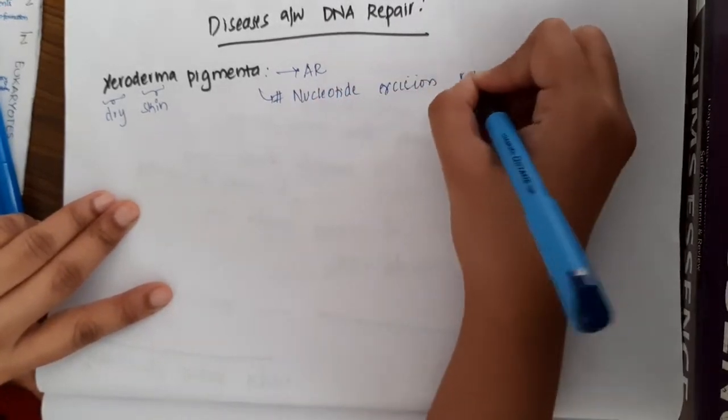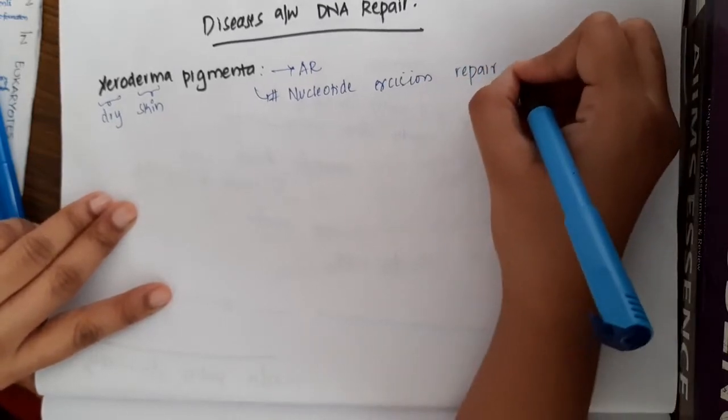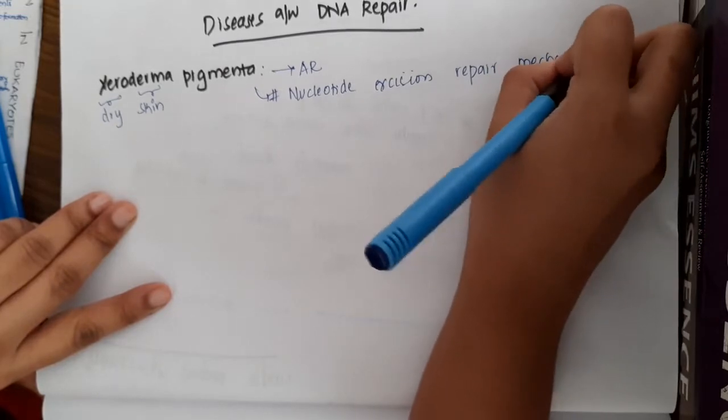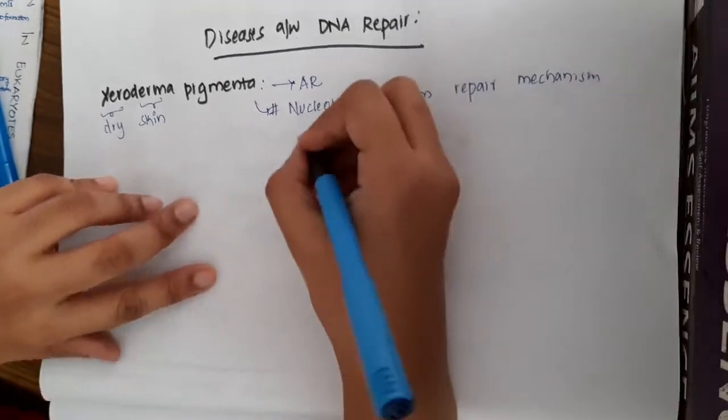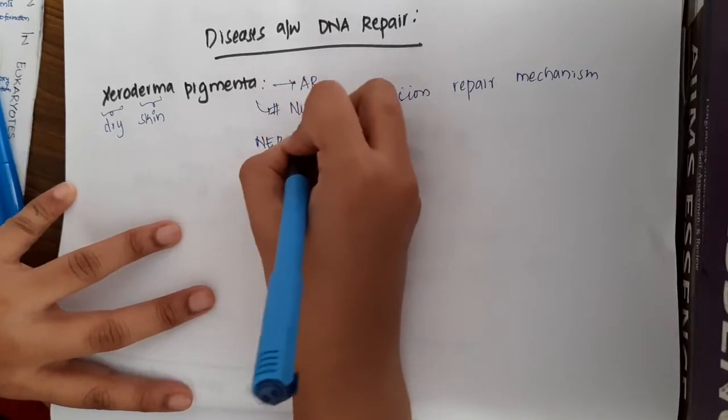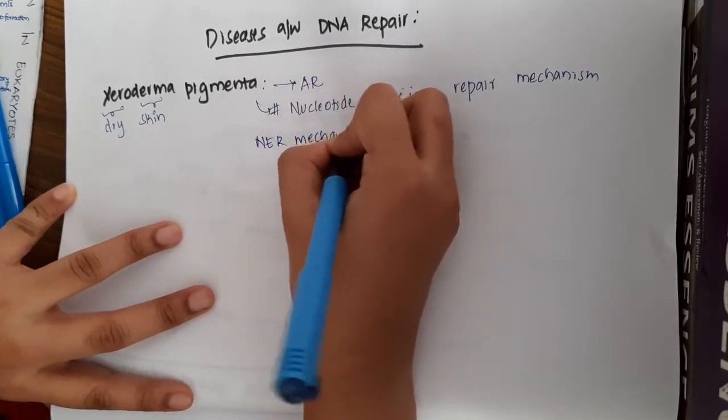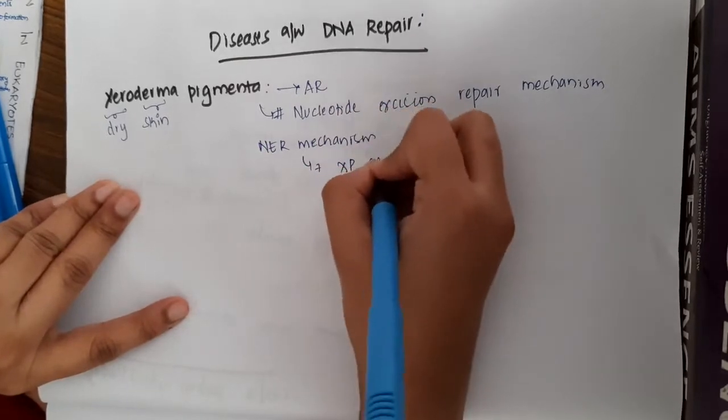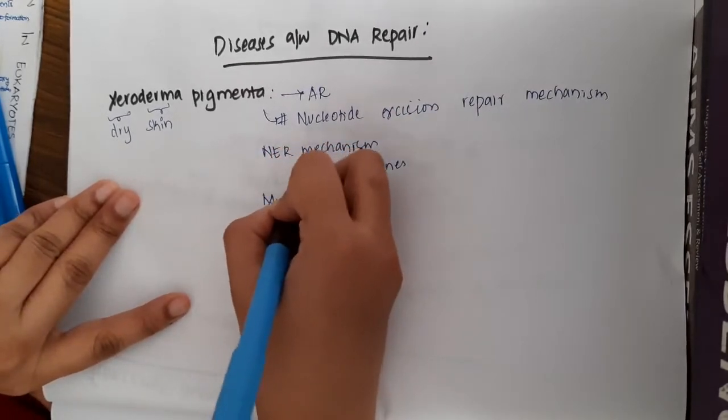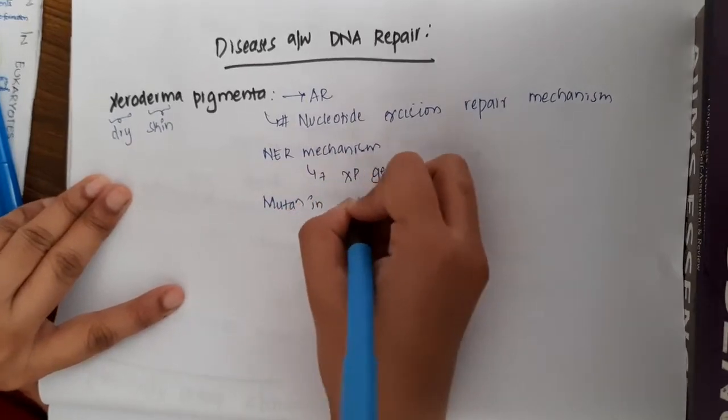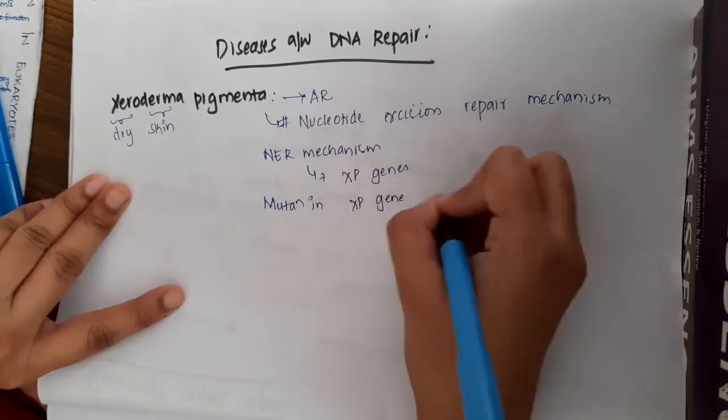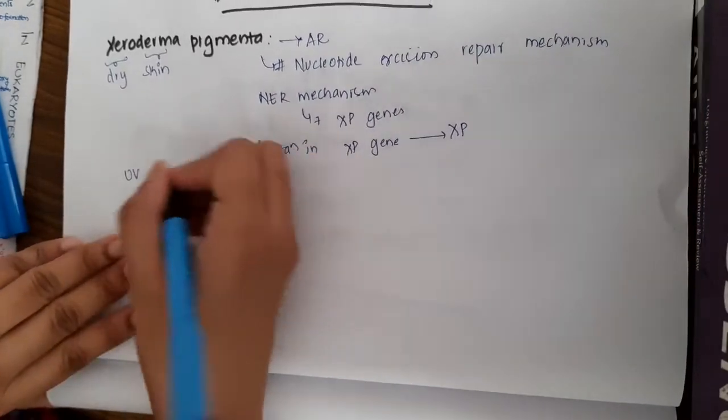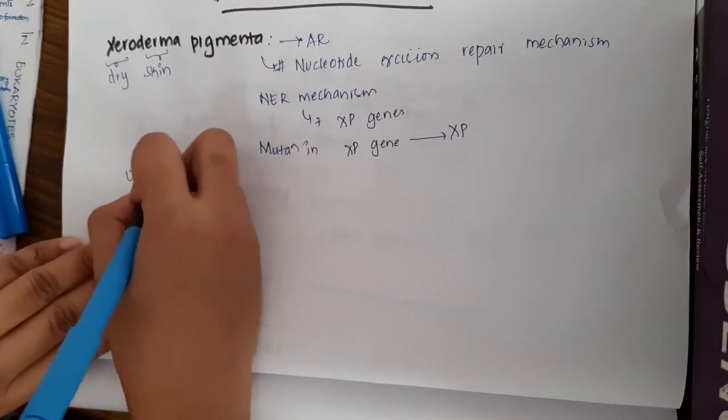This nucleotide excision repair mechanism requires 7 xeroderma pigmentosa genes. If there is some mutation in these xeroderma pigmentosa genes, this will result in xeroderma pigmentosa. This mutation is induced by UV light.